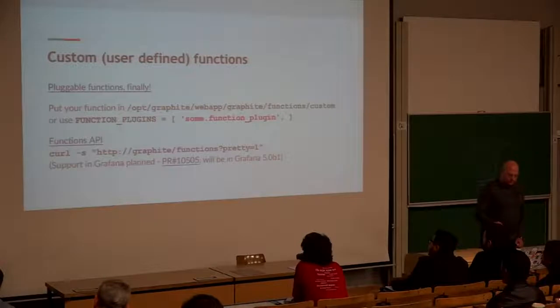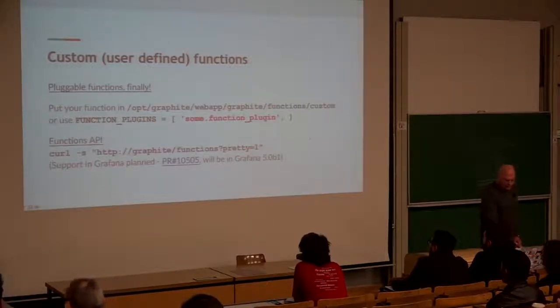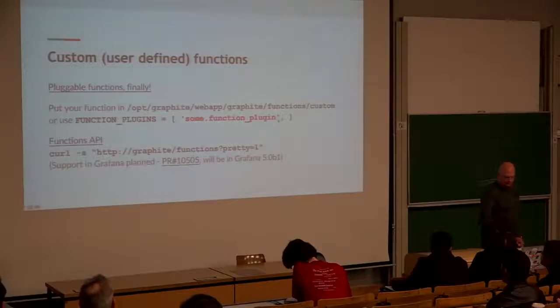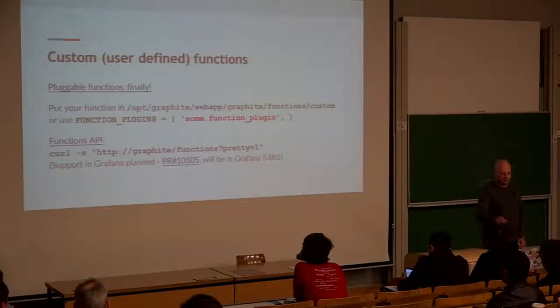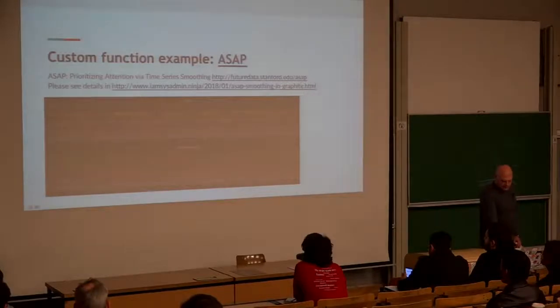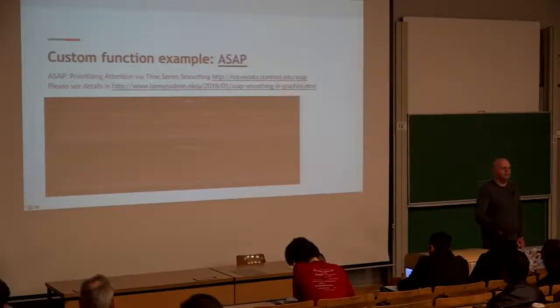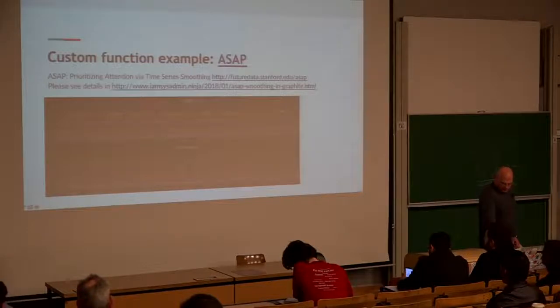Now we also have plug-in functions. You can write your own piece of code, annotate it in a special way, put it in a specific directory, and you will get this function in your Graphite installation after reload. There is also a function API. In Grafana 5 Beta, which will come on Monday, you will get support for this. If you annotate your function properly, you will see your function in Grafana web. As an example, check this link. This is my plugin. I implemented the SAP algorithm in Graphite. SAP is a smoothing algorithm. You probably remember this talk from the latest monitoring conference. Check this link if you're interested.